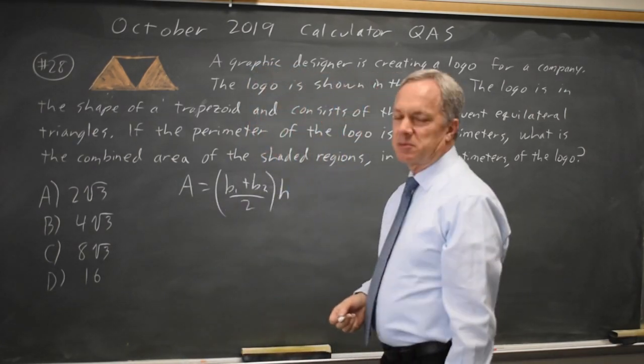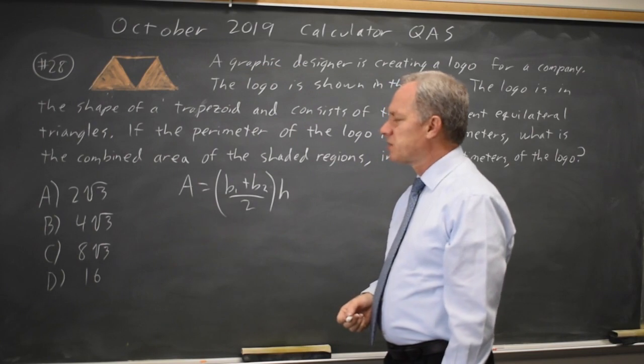And the area of a trapezoid is base 1 plus base 2 over 2 times the height. So it's the average of the bases times the height, or if it's oriented in the opposite direction, it's the base times the average height.